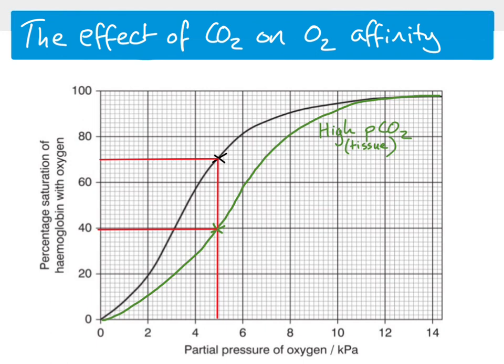What we can see is that when there is more carbon dioxide present, hemoglobin has a lower affinity for oxygen. So increasing CO₂ reduces hemoglobin's oxygen affinity, meaning more oxygen gets released — which is exactly what is needed in actively respiring tissues.